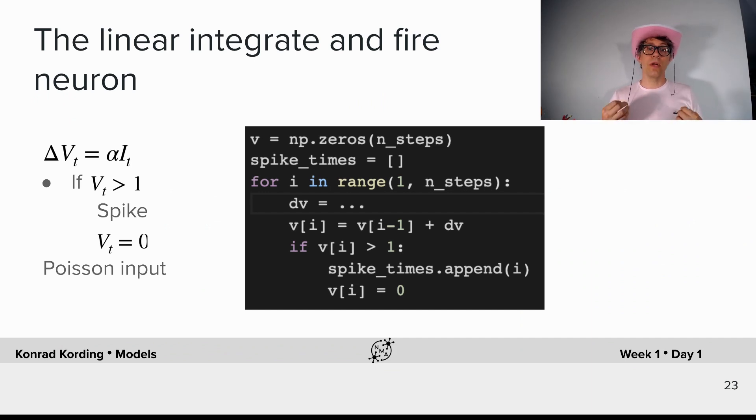So now we will build what is probably the most popular model that exists, which is the linear integrate and fire neuron. What's the idea there? We have a voltage that changes over a short period of time, and that change depends on the current that we get. So we can say it's a small constant alpha times the input current that we get at that point in time.